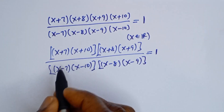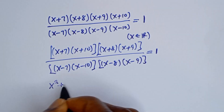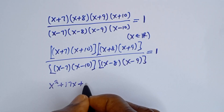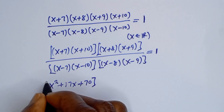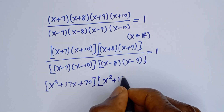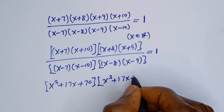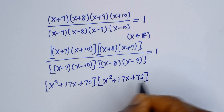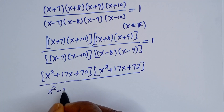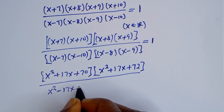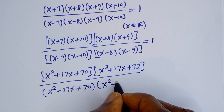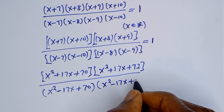Now let's multiply this out. S plus 7 times S plus 10 gives S squared plus 17S plus 70, multiply by S plus 8 times S plus 9 gives S squared plus 17S plus 72, divided by S minus 7 times S minus 10 gives S squared minus 17S plus 70, multiply by S squared minus 17S plus 72.